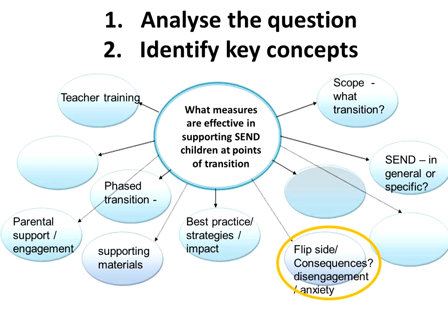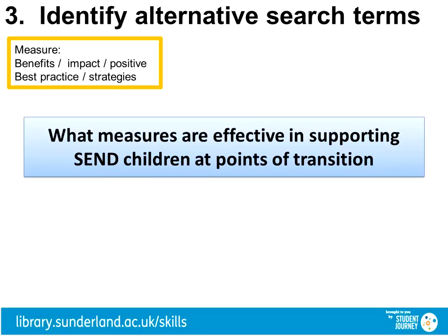Once you've identified some key concepts, you'll need to identify alternative search terms in order to find a good range of information. This is step three. Not all researchers describe the topic in the same way as you or I. You will need to use the right vocabulary to locate relevant materials, so we think of alternatives to increase our chances. Benefits, impact, positive outcome, and best practice are all ways of saying something similar.